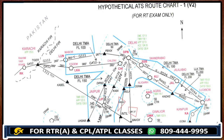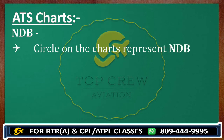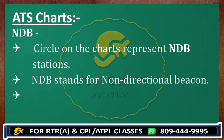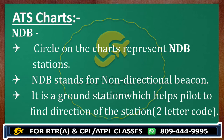If you look at the left side where it is written Pakistan, you can see a circle represented by Romeo Kilo — this is a two-letter code. This circle on the charts represents NDB stations. NDB is Non-Directional Beacon; it is a ground-based station which helps the pilot to find the direction of the station. As you know, Rahim Ya Khan — this is just near Karachi, before Tiger compulsory reporting point.